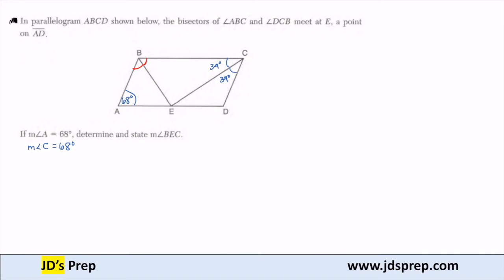What we're trying to find is angle BEC. So what we're going to be doing is, now that I know A is 68, and each of those, ECB and DCE are both 34.